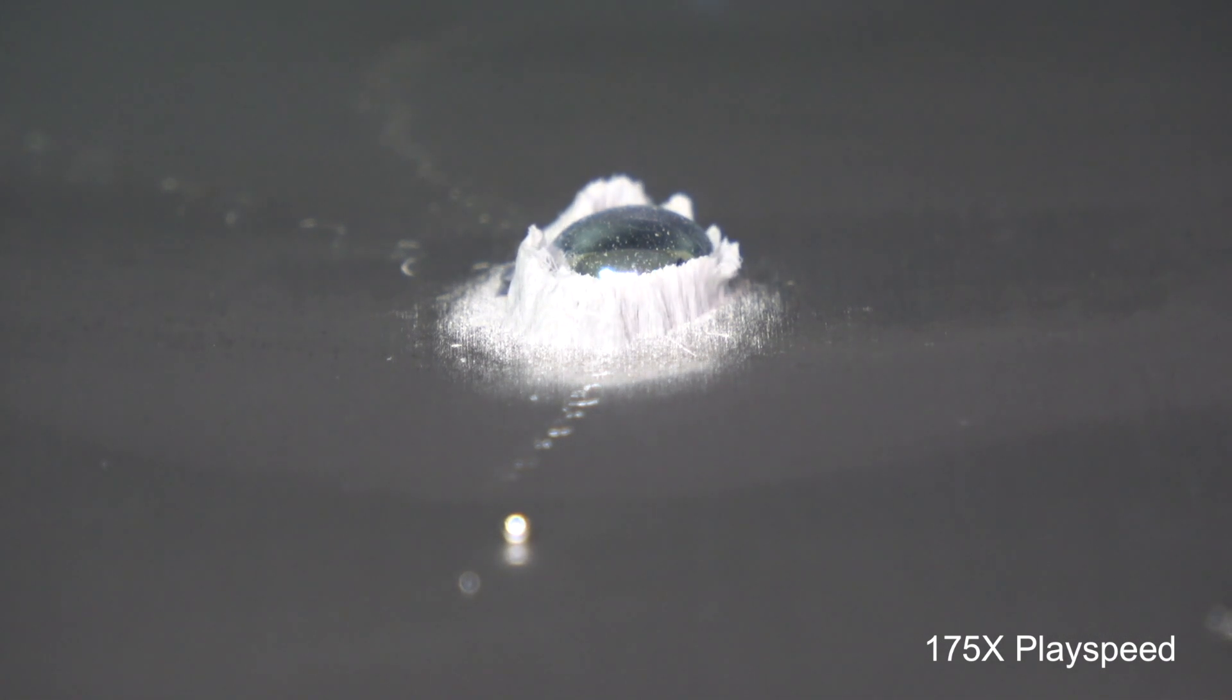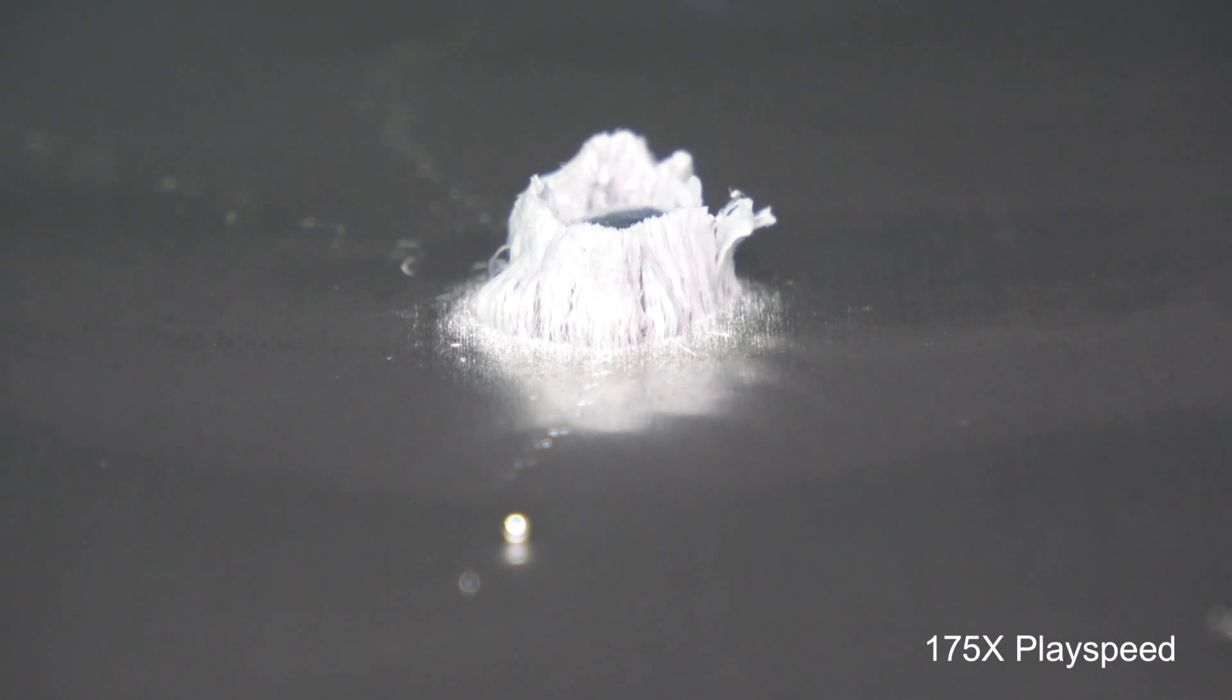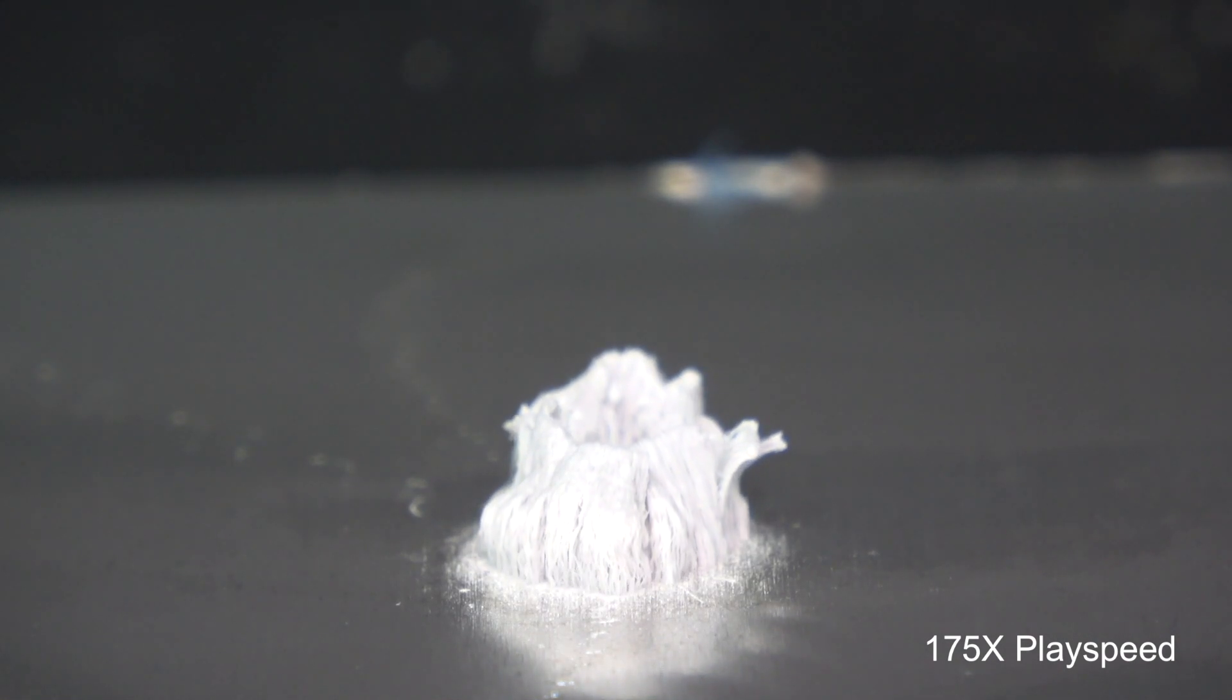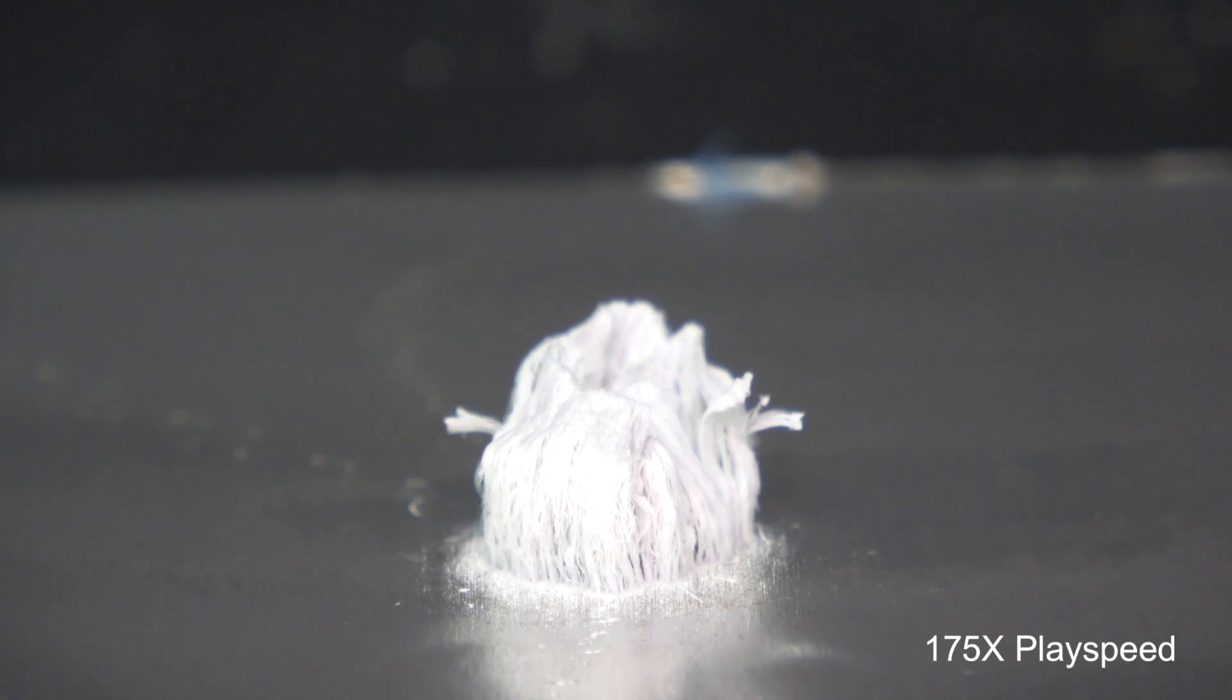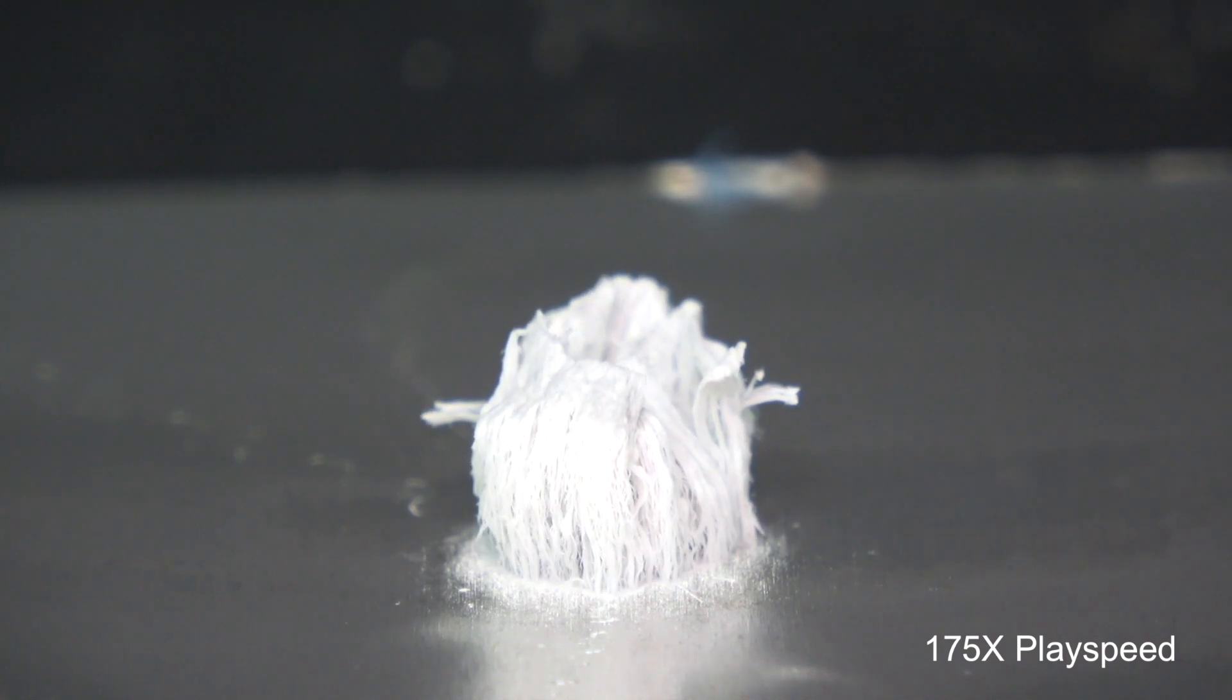And just like what happened in the previous video, the mysterious white fiber appeared once again around where the mercury droplet is. This time though, since all the mercury is at one spot, the effect it creates looks a lot neater.